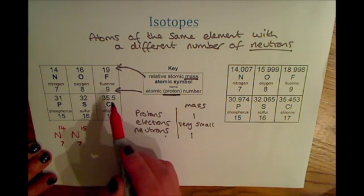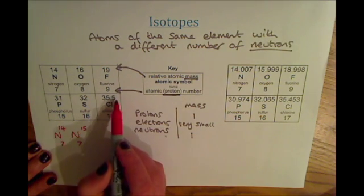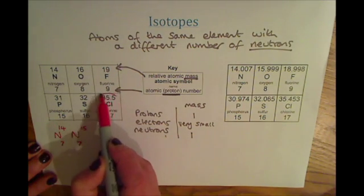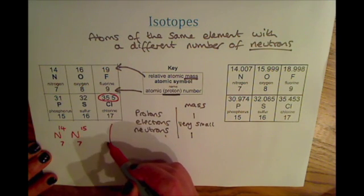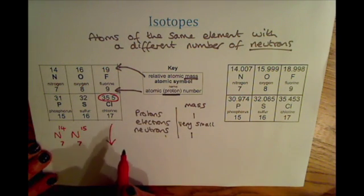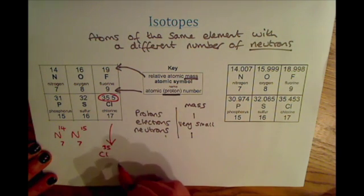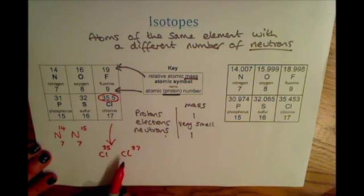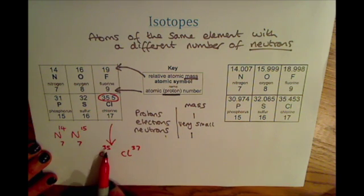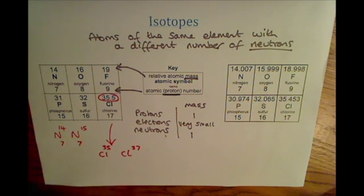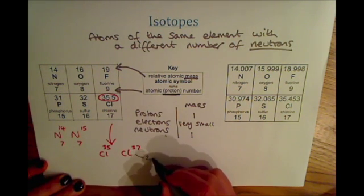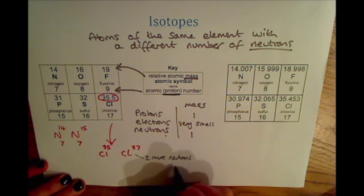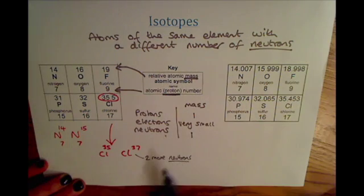That's why in your periodic table chlorine has an unusual mass number of 35.5 — because in nature there are different isotopes of chlorine: chlorine-35 and chlorine-37. Chlorine-37 has two more neutrons than chlorine-35. Whenever you get a question about isotopes in your exam, always discuss the difference in the number of neutrons.